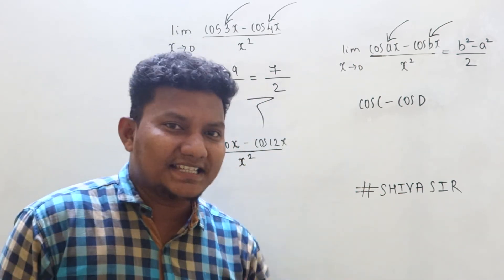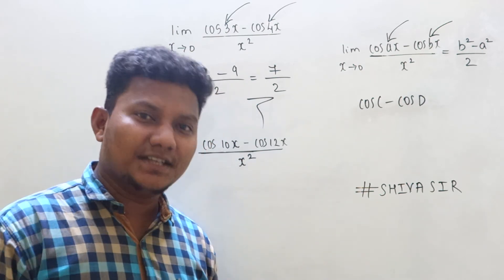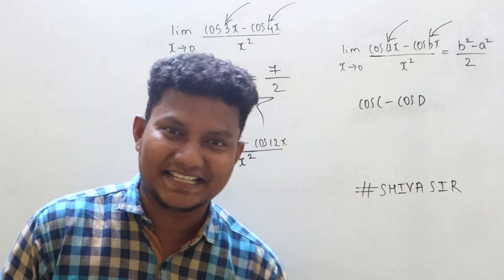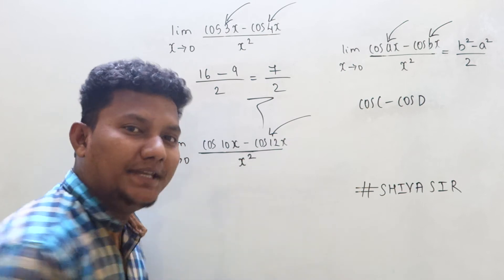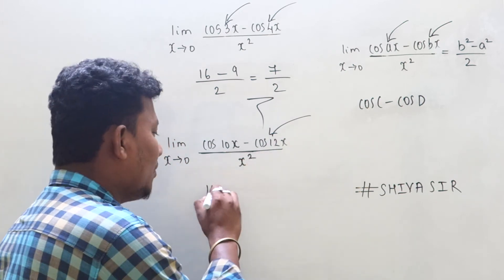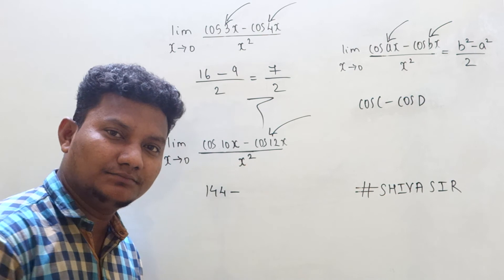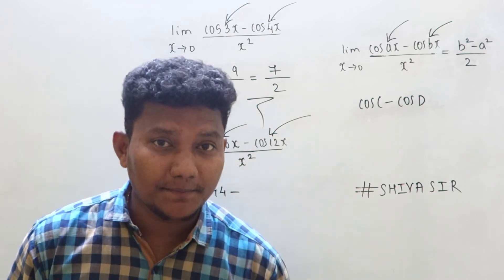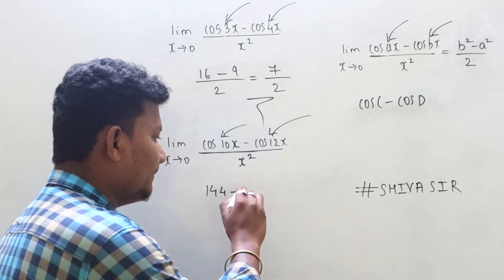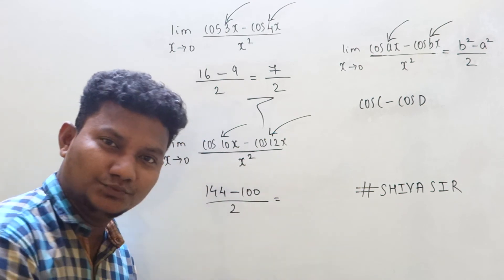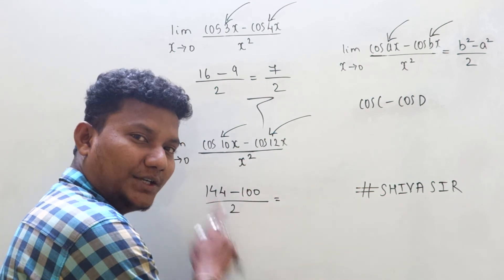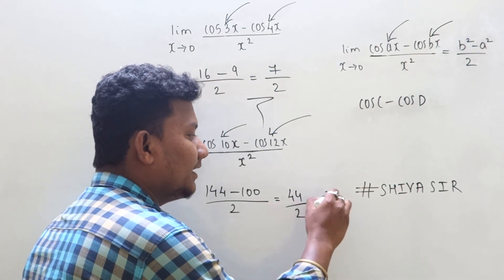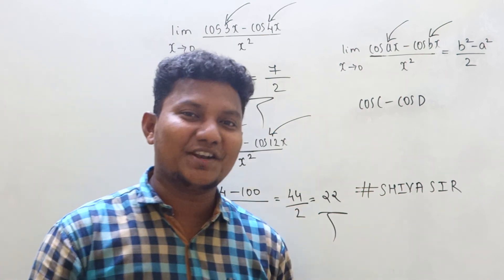After solving the second example, it will build confidence and you will like to solve more and more calculus. So in the second example, in place of b it is 12, so 12 square is 144. In place of a it is 10, so 10 square is 100. Applying the formula b square minus a square by 2, we get 144 minus 100 by 2, which is 44 by 2, and the final answer is 22.